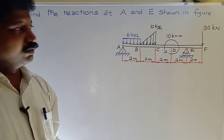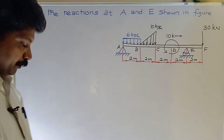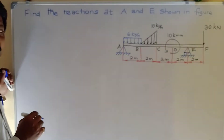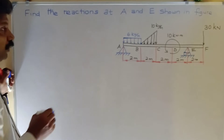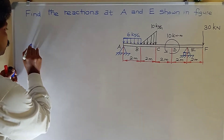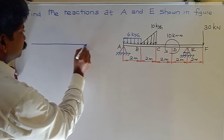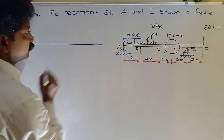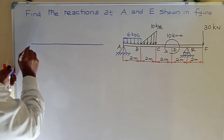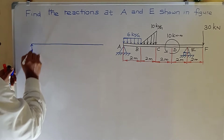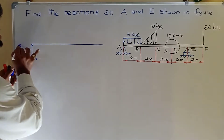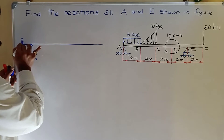First, draw the free body diagram of the given beam. At point A, two reactions are available: RAV (vertical) and RAH (horizontal), since it is a hinge support.